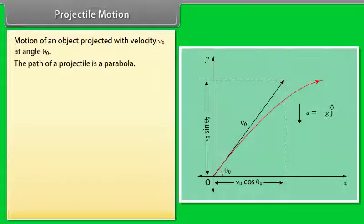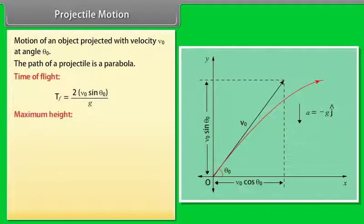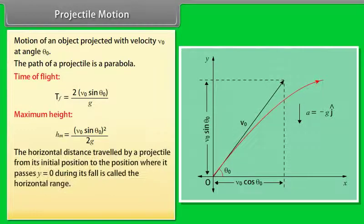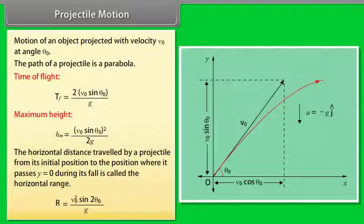Motion of an object projected with velocity ν₀ and angle θ₀ is shown in figure. The path of a projectile is a parabola. Time of flight of projectile is Tf equals 2ν₀ sin θ₀ divided by g. Maximum height of a projectile is Hm equals ν₀² sin² θ₀ divided by 2g. The horizontal distance traveled by a projectile from its initial position to the position where it passes y equals 0 during its fall is called the horizontal range. Horizontal range of projectile is given by product of ν₀² and sin 2θ₀ divided by g.